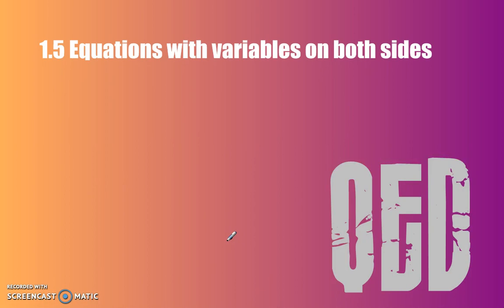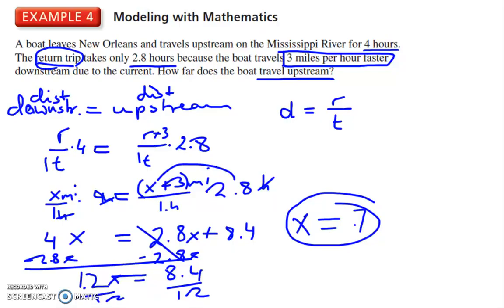There you go, ladies and gentlemen. What was to be shown has been shown. That is section 1.5, equations with variables on both sides. 7 miles.